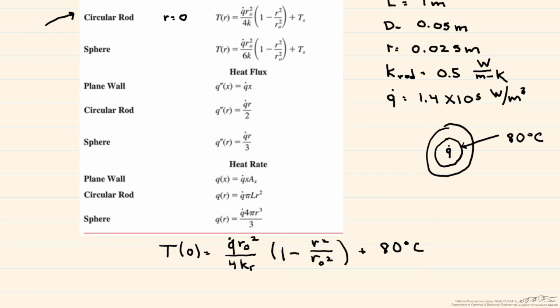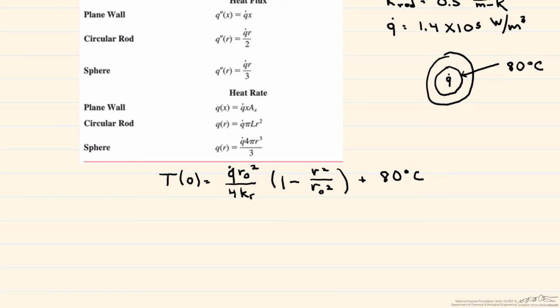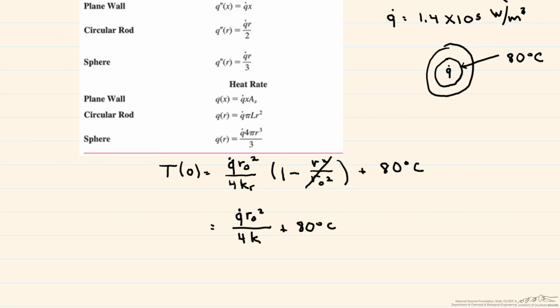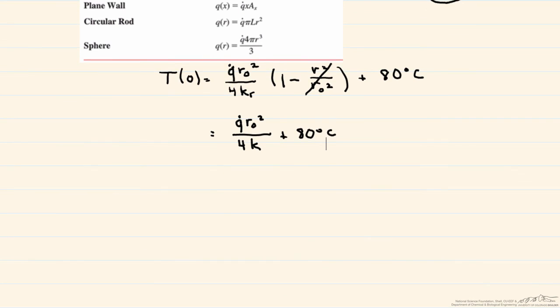Now because we're looking for it at r equals zero, note that this term becomes zero. And what we're left with is, if we put our numbers in, we end up with a centerline temperature of 124 degrees Celsius.